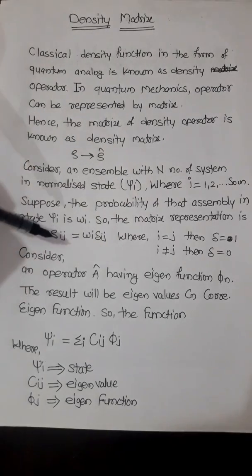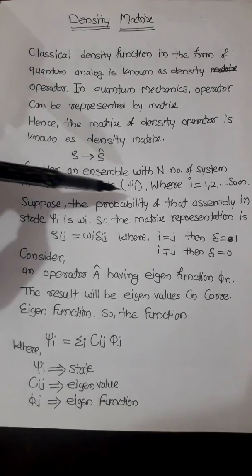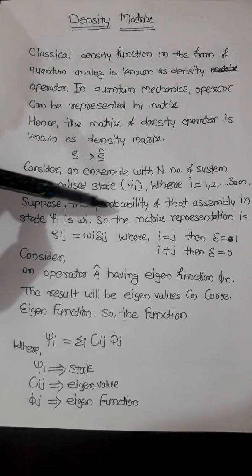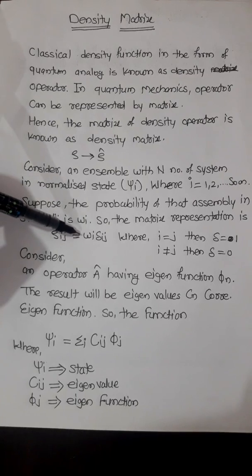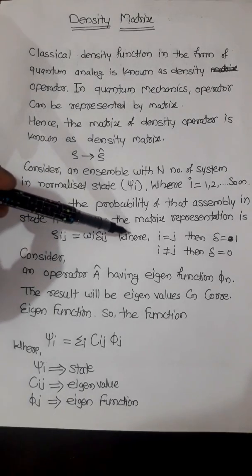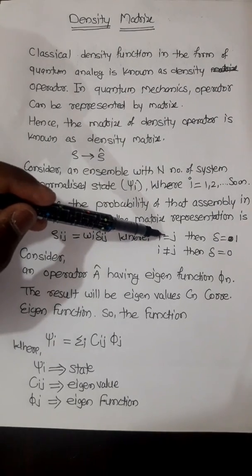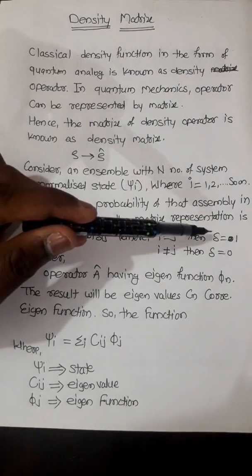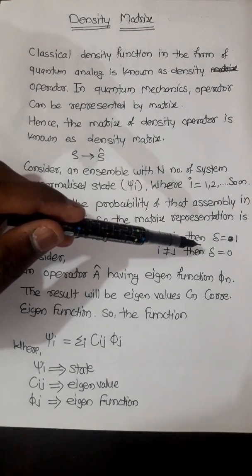The matrix representation is wᵢ = wᵢ · δᵢⱼ, where δᵢⱼ is the Kronecker delta. If i equals j, then delta equals 1. If i is not equal to j, then delta equals 0.